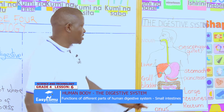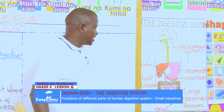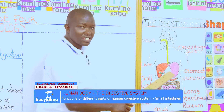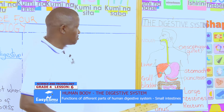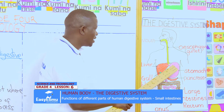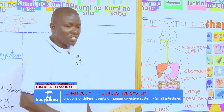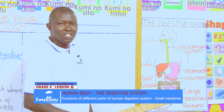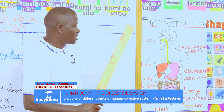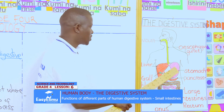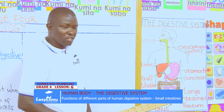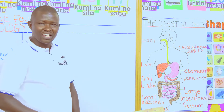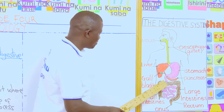Once the food reaches the stomach, it is mixed with the hydrochloric acid inside the stomach, which kills the germs, and the gastric juice which is produced by the wall of the stomach, which digests the part of the food called proteins — the bodybuilding foods. That is what we had learned in the previous lesson.